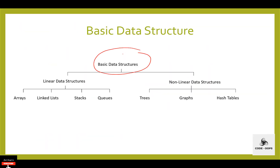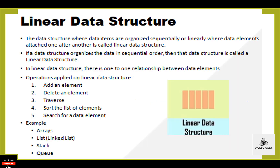Next are the types of data structures. There are two types: linear data structure and nonlinear data structure. Linear data structures are those in which elements are arranged in one dimension, known as the linear dimension. Data items are organized sequentially or linearly, where elements are attached one after another.